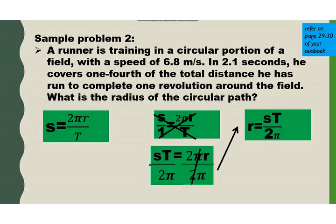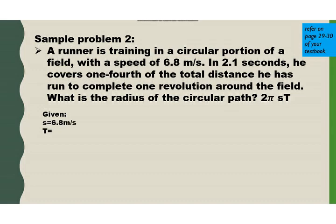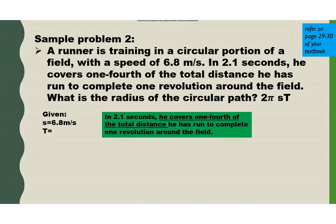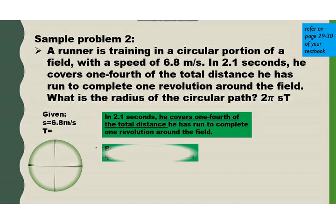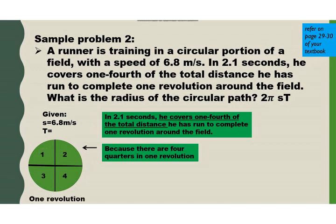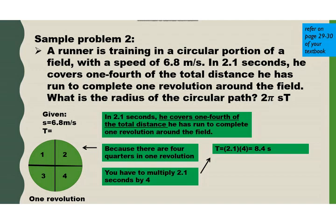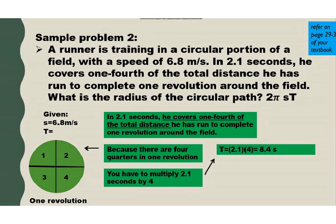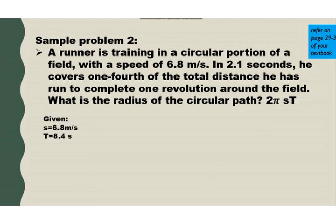For the given: speed = 6.8 meters per second. For time, analyze the problem: in 2.1 seconds he covers one-fourth of the total distance. Because there are four quarters in one revolution, multiply 2.1 seconds by 4 to get 8.4 seconds. This is not always the case — it depends on what fraction of the revolution is described. So the period is 8.4 seconds.